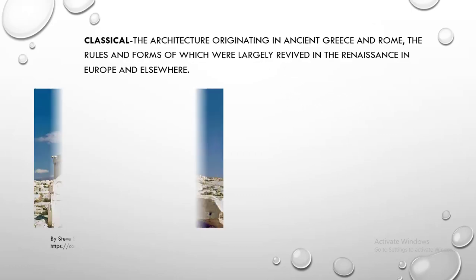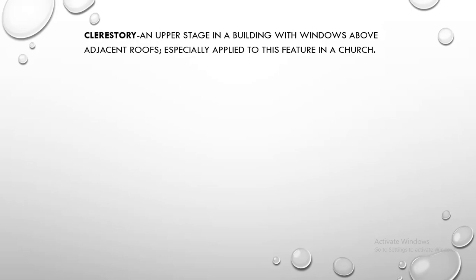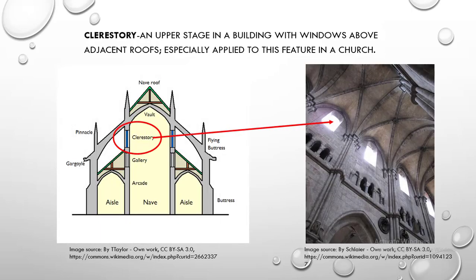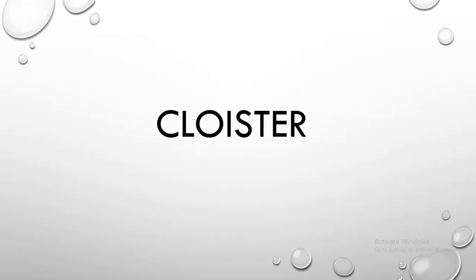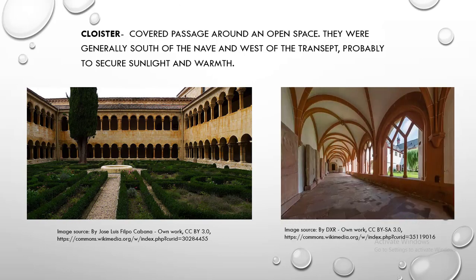Classical. Classical is the architecture originating in ancient Greece and Rome, the rules and forms of which were largely revived in the Renaissance in Europe and elsewhere. Clerestory. Clerestory is an upper stage in a building with windows above adjacent roofs, especially applied to this feature in a church. Cloister. Cloister is a covered passage around an open space, generally south of the nave and west of the transept, probably to secure sunlight and warmth.